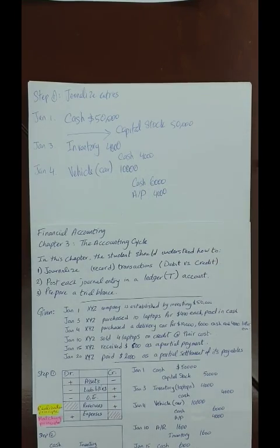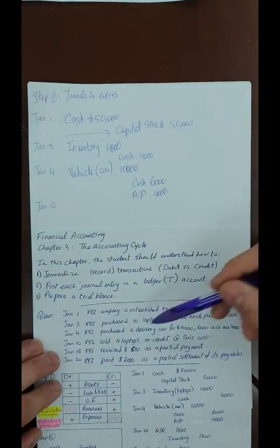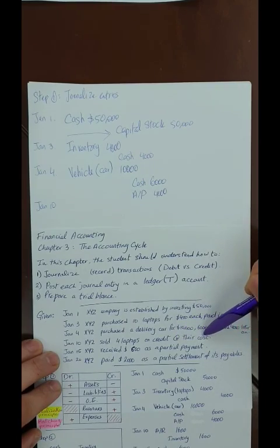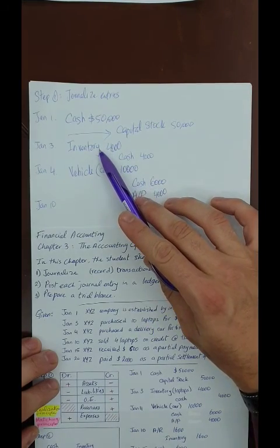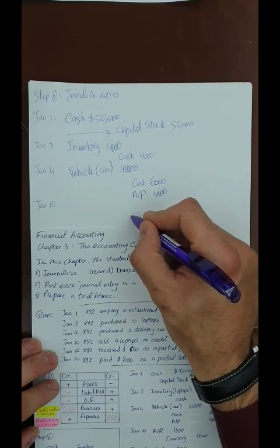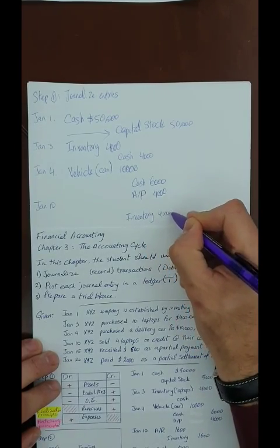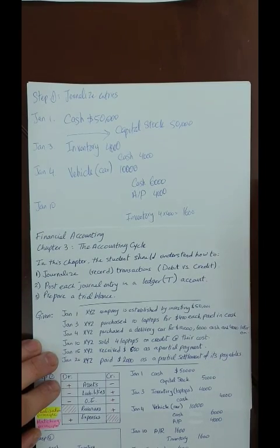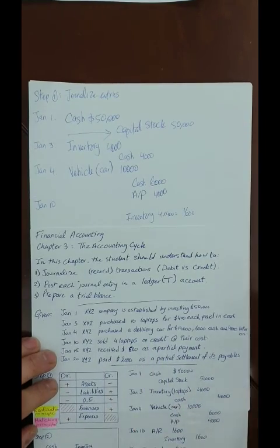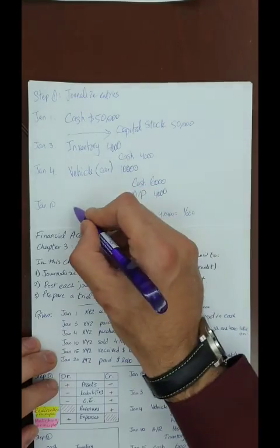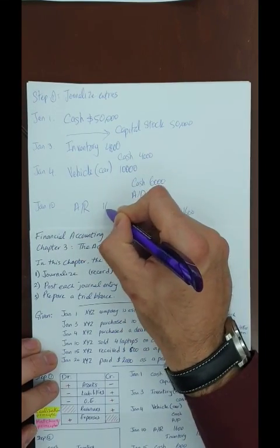Jan 10 — four laptops sold on credit at their cost, so there is no gain or loss. Inventory declines by 4 × $400 = $1,600, placed on the credit side. The sale was on credit, so accounts receivable increases — accounts receivable is an asset, increasing by debit. DR Accounts Receivable $1,600, CR Inventory $1,600.